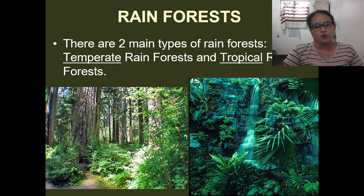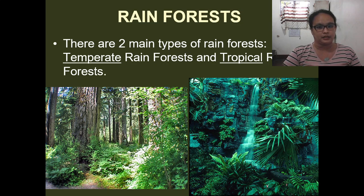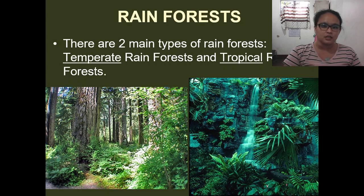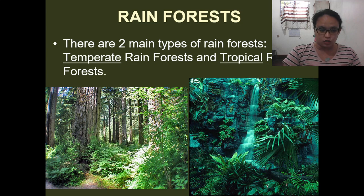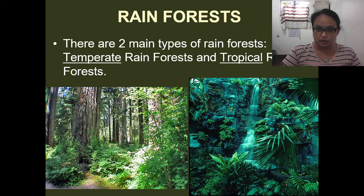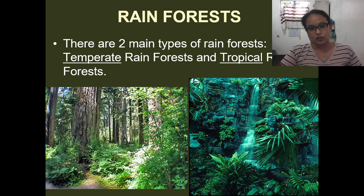We have the rainforest, and there are two main types: the temperate rainforest and the tropical rainforest. The difference is that rainforest found in a temperate region — which has seasons like winter, autumn, spring, fall, and summer — is called the temperate rainforest. The tropical rainforest is located in a tropical region, which has only two seasons: the rainy season and the dry season.